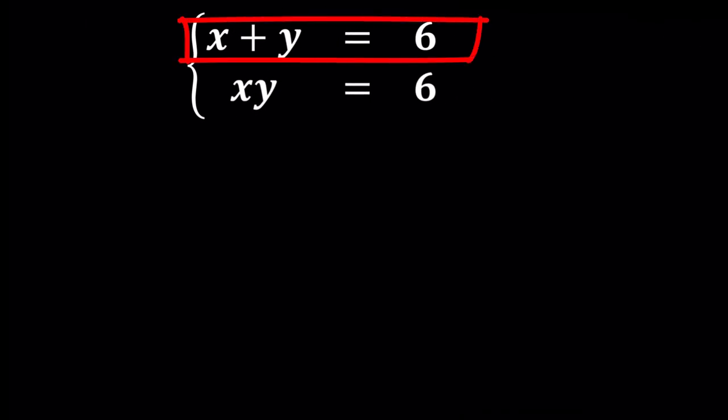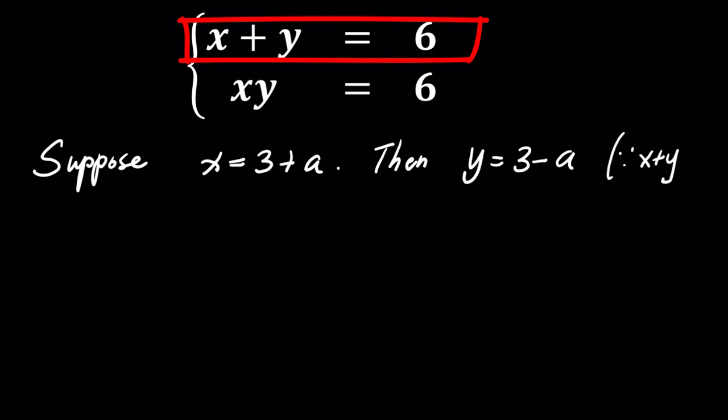Given that x plus y equals 6, we observe that this sum is twice the value of 3. Let's explore a useful strategy by setting x to be 3 plus a. Consequently, this implies y is 3 minus a to maintain the balance of the equation.